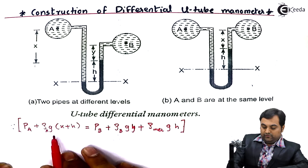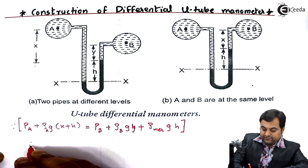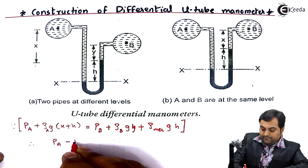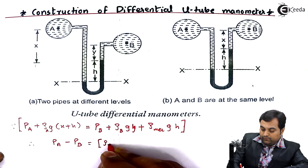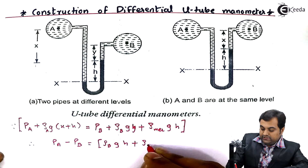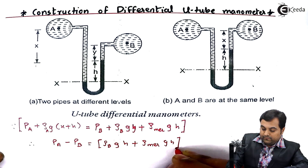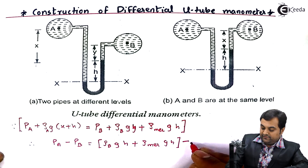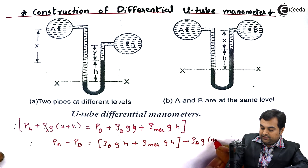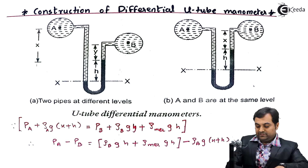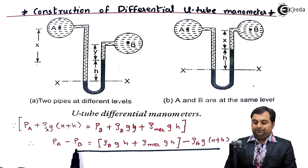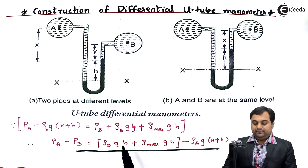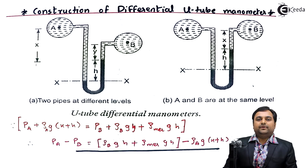After writing the pressure equations for both limbs, we take the difference. Shifting Pb to the left side gives: Pa − Pb = ρb · g · y + ρmercury · g · h − ρa · g · (x + h). From this equation we can easily calculate the pressure difference between pipelines A and B. The same procedure is used for pipes at the same level. In summary, we have seen how a differential manometer looks, its function, and how to calculate the pressure difference.